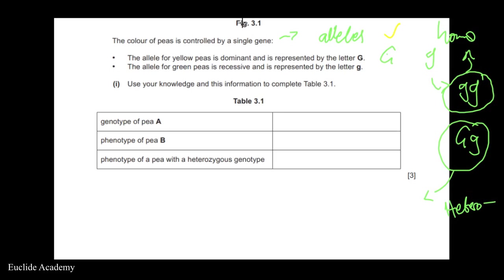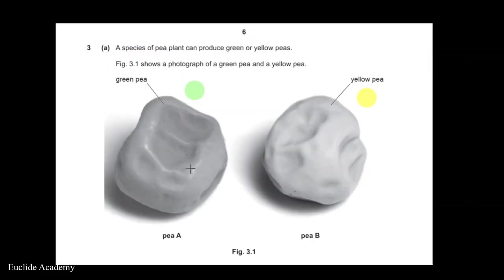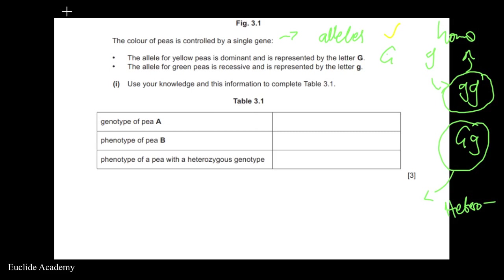Pa is green in appearance. For that to happen, the genotype must be homozygous recessive — lowercase g and lowercase g. That is the only way this pea will be green. When we say genotype, we are talking about the actual genetic makeup — what genes are genuinely present.